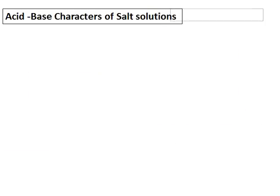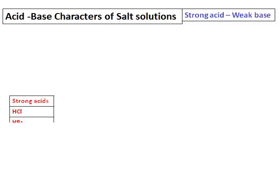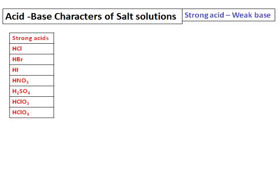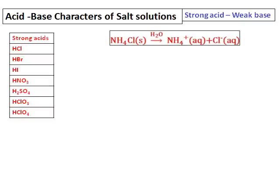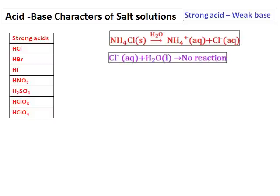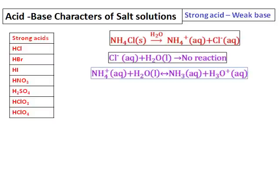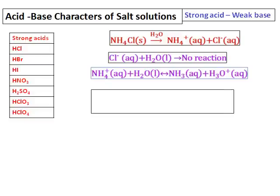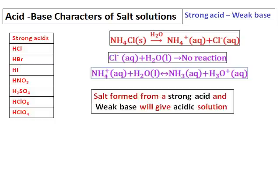The next group of salts is formed from a strong acid and a weak base. Consider ammonium chloride, formed from the weak base ammonium hydroxide and the strong acid hydrochloric acid. When dissolved in water, I get ammonium ions and chloride ions. The chloride ion, being the conjugate base of a strong acid, has no reaction with water. But the ammonium ion, the conjugate acid of the base, reacts with water to give ammonia and H₃O⁺. The presence of H₃O⁺ makes the solution acidic. So a salt from a strong acid and weak base gives an acidic solution.